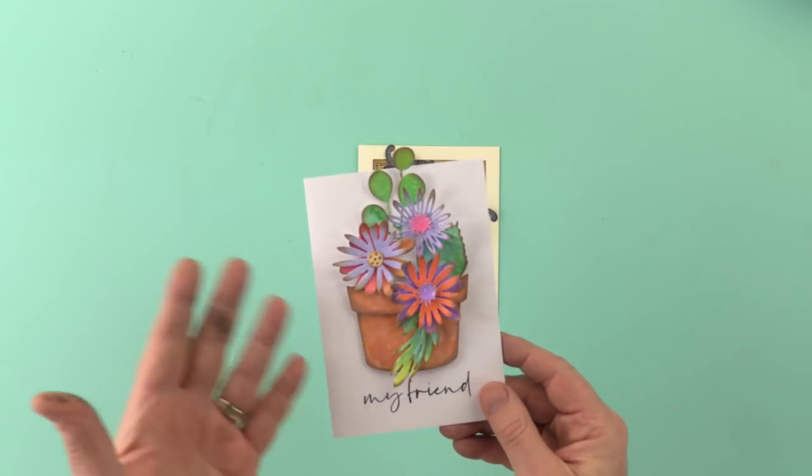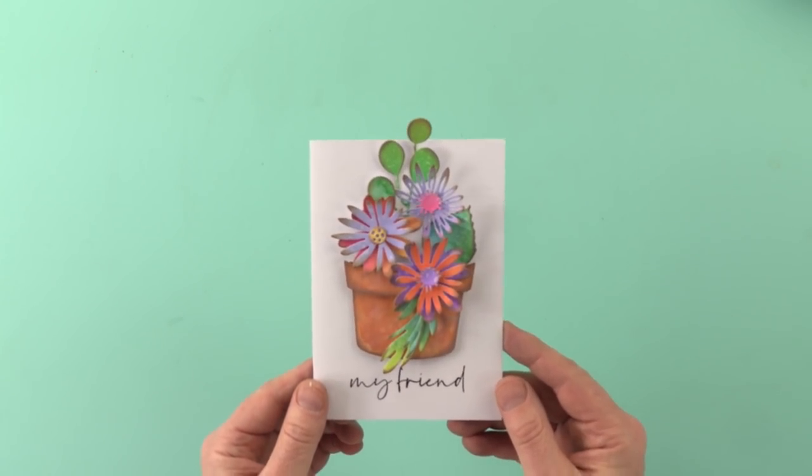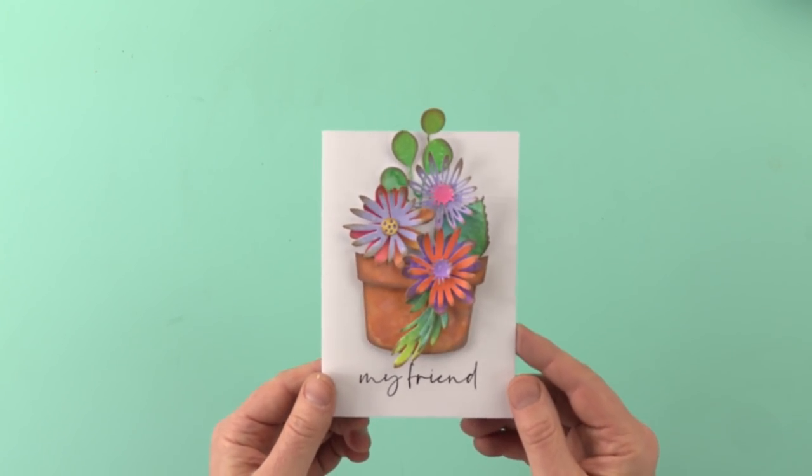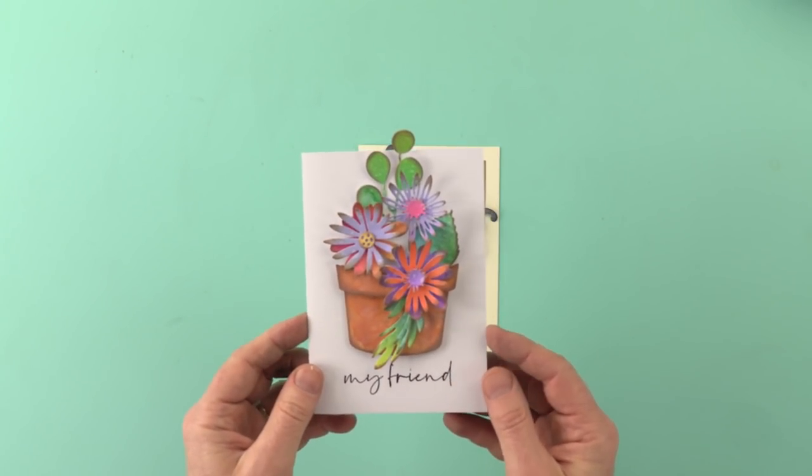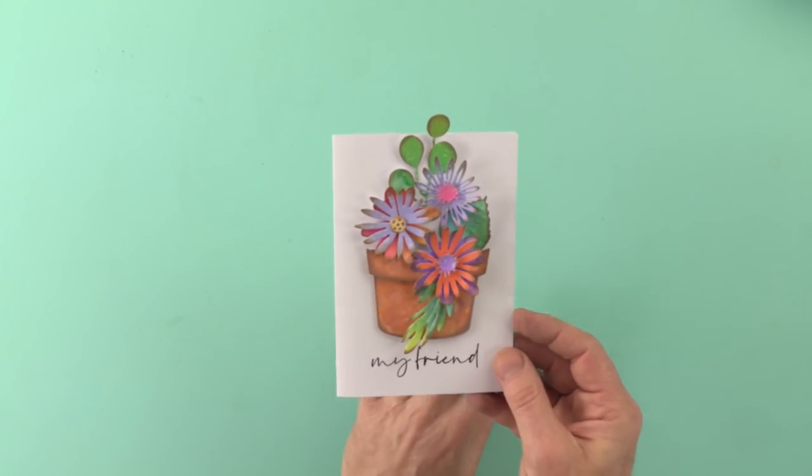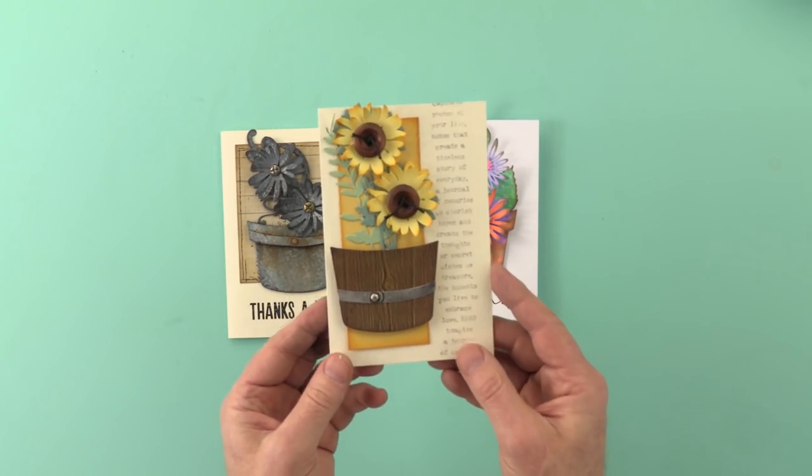This one, you can see we've gone for the effect of a terracotta pot. Again, we've used the Funky Florals Large die set. And all of the coloring on this is done with Distress Oxide inks.